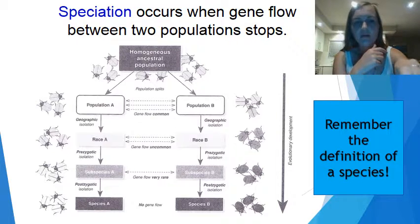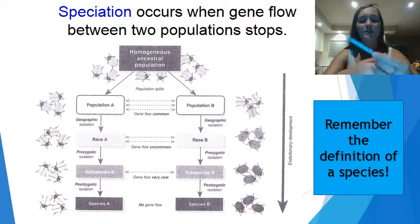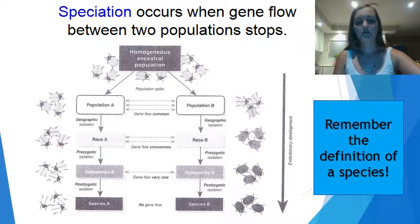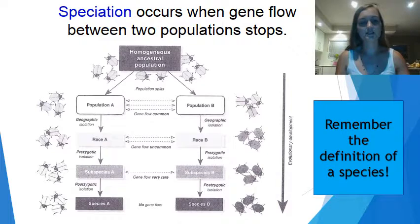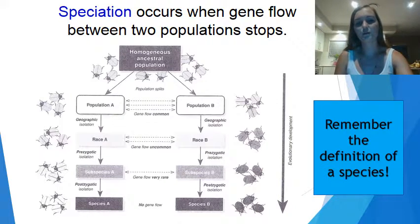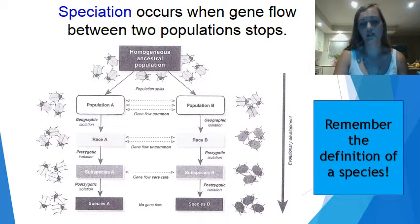At the top, we have our homogenous ancestral population, then a splitting event occurs which causes this population to start to develop differently, until it becomes firstly two different races, then two different subspecies, and then two different species. You can see how gene flow becomes reduced as you go down the picture, until between the two species there is no gene flow, meaning they can't interbreed.